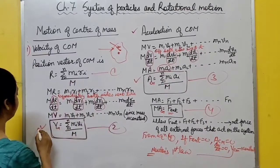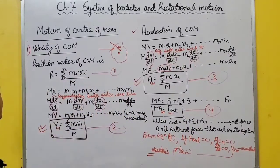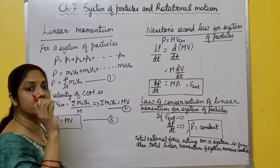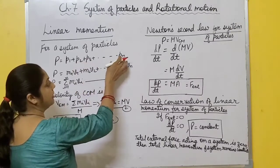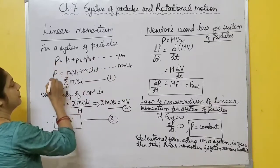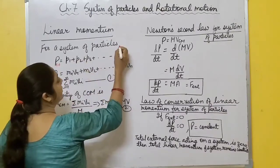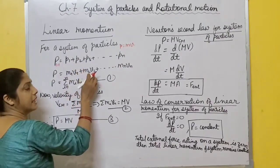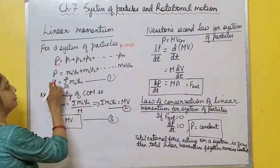Now, linear momentum for a system of particles equals the sum of linear momenta of individual particles: P = p₁ + p₂ + p₃ + ... = Σmᵢvᵢ. We already know velocity of center of mass V = Σmᵢvᵢ / M, so Σmᵢvᵢ = MV. Therefore total momentum P = MV, where M is total mass and V is velocity of center of mass.